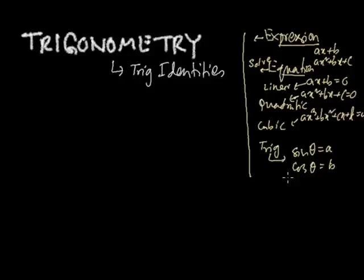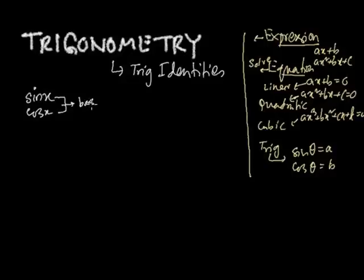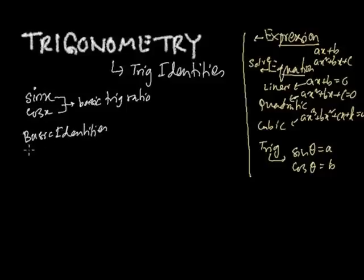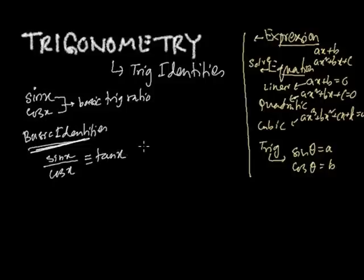If I think about the trigonometric expression sin x, and we also have cos x — these are the basic trigonometric ratios. But now we are not talking about the ratio; we are talking about something abstract. The first basic identity is: sin x divided by cos x gives us a new creature called tan x.